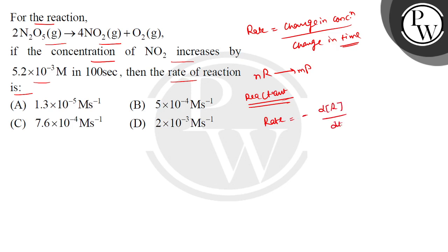d concentration over dt will be multiplied by 1 over n, which is our stoichiometric coefficient. We have our reactant, and minus will be there because the concentration of our reactant will be decreased. So we will have minus.